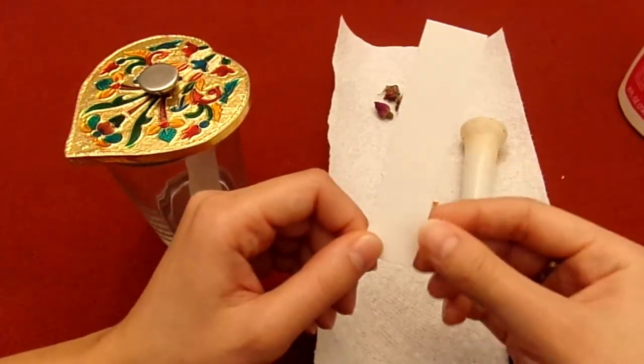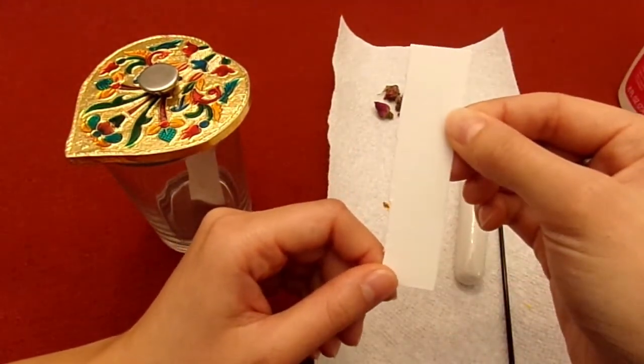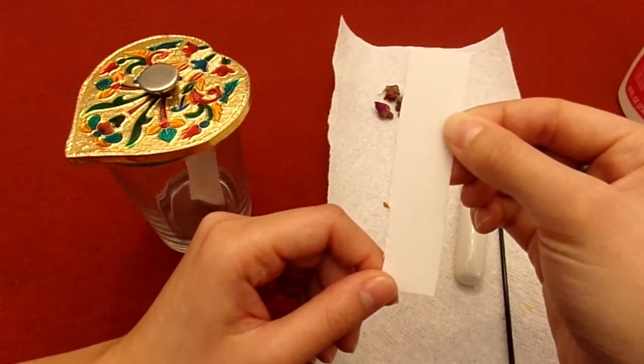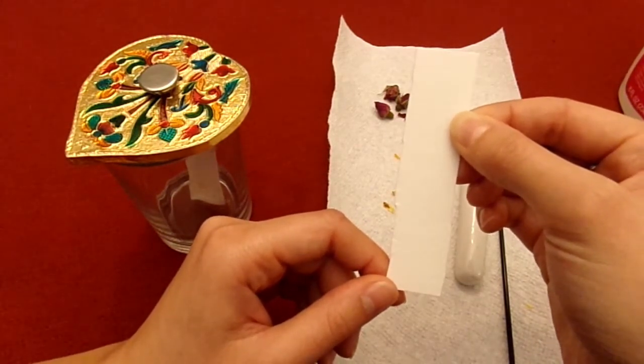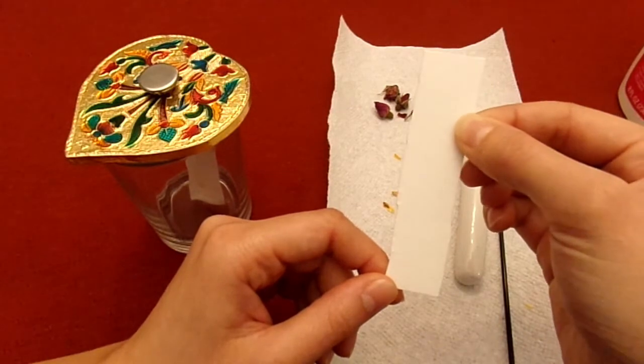Wait for the acetone to travel about three-fourths of the way up the paper. This should take about 10 minutes. Then take the paper out and let it dry and record what pigments you see.